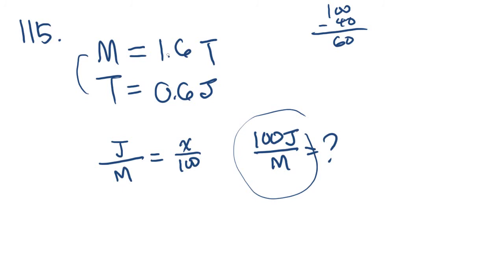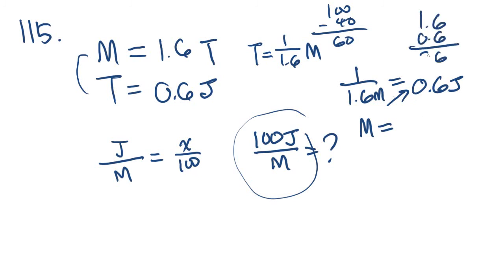So m equals 1.6t. We should try to set m equal to j. t equals 1 over 1.6 m. Normally I don't like to mix fractions with decimals, but I think in this case this should be okay. If that's the case, then 1 over 1.6 m equals 0.6j. Cross multiply to figure out the relationship between the two. And you get m equals 0.96j.